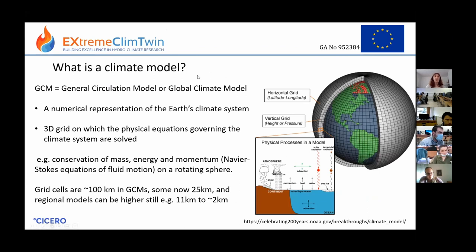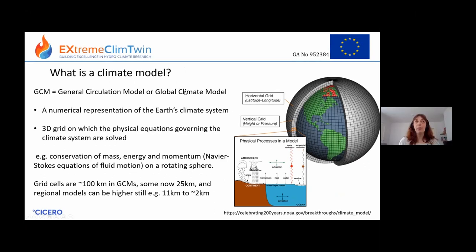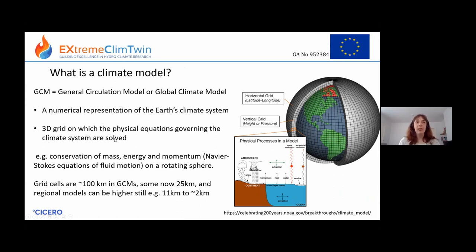What is a climate model? We also call them a GCM, which can stand for General Circulation Model or a global climate model. They're a numerical representation of the Earth's climate system — they have a 3D grid, and in reality they have more vertical levels than shown. On this grid, it solves equations to do with the physics of the climate system: things like conservation of mass, energy, and momentum. You have the Navier-Stokes equations of fluid motion, and they have to take into account the fact that the Earth is rotating. It describes the exchange of momentum, energy, wind and so on between the grid cells.